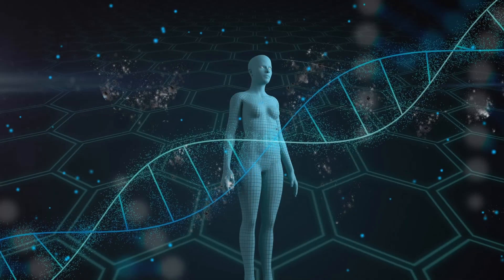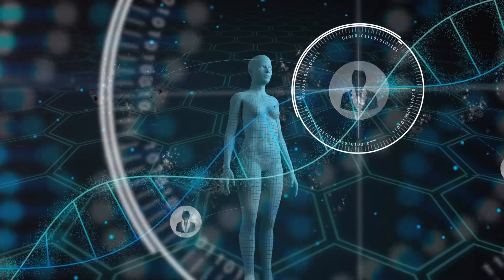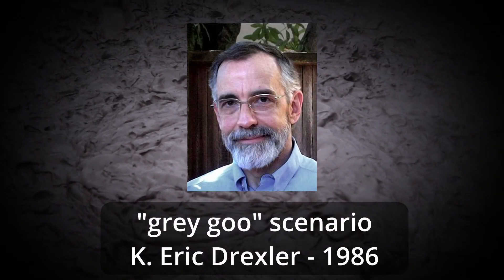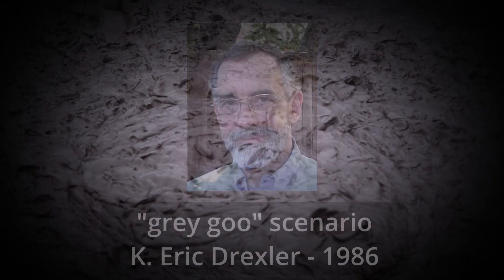Then there are ethical risks, like human enhancement, which raises questions about fairness and identity. And then there's the famous grey goo scenario described in 1986 by K.E. Eric Drexler. The idea of out-of-control, self-replicating nanobots that could consume all organic matter on Earth. It's a fascinating and terrifying idea, though for now, it remains pure science fiction.